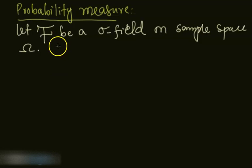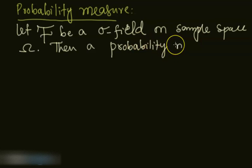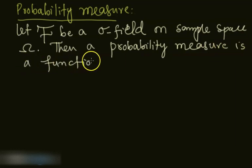Then a probability measure is a function denoted by P.